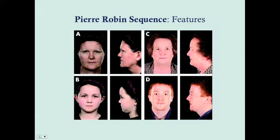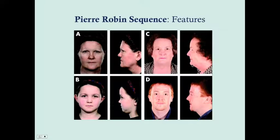This is glossoptosis — here are the gums, and here is where the tongue is sitting. This tongue is abnormally posterior. Here is Pierre Robin sequence in a child and then some adults — notice the smaller, very unpronounced chin.